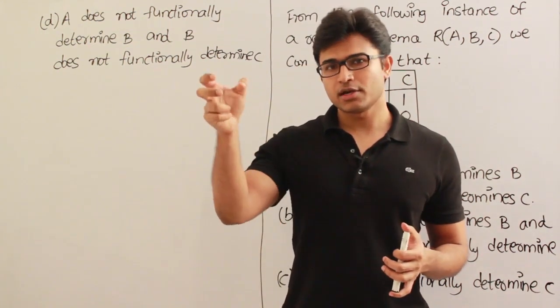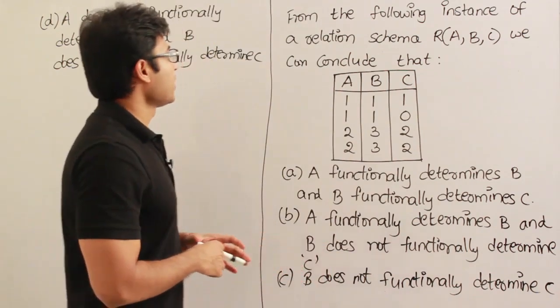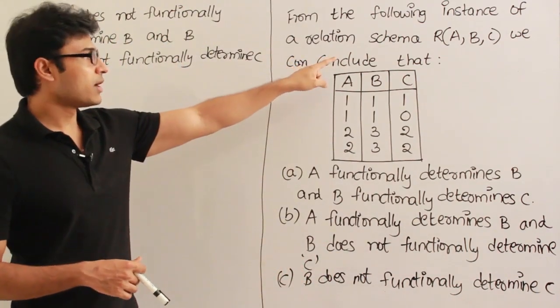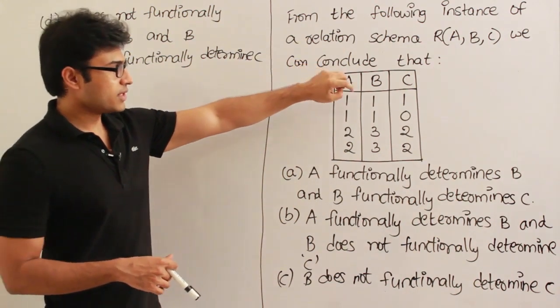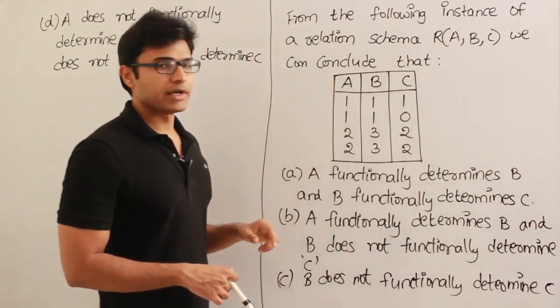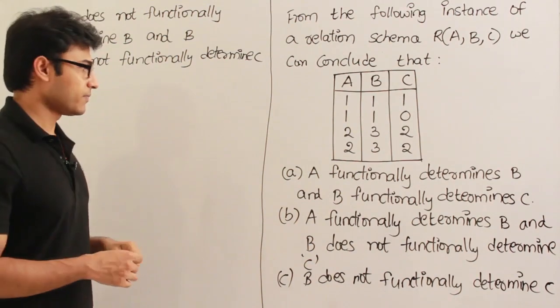We have functional dependencies derived from the instances of the relations. Now from the following instance of the relation schema R(A,B,C), which means there is a table with name R and attributes A, B, C - from this what can you conclude? That is what they are asking.